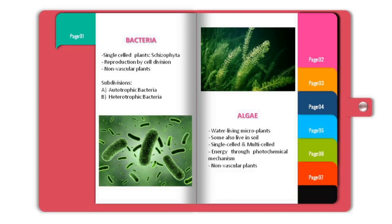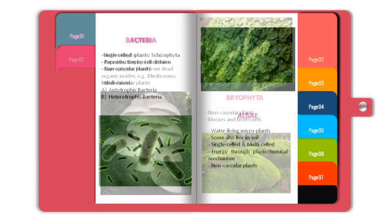Next is algae. Algae are water-living micro plants, though some also live in soil. Some algae are single-celled while some are multi-celled. They get their energy through photochemical mechanism, that is from light. They are also non-vascular plants.